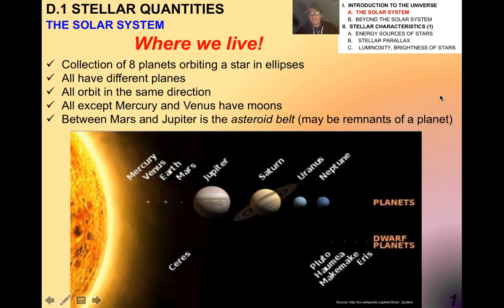Okay students, welcome to topic or option D, your first and only option in IB physics, and this is astrophysics. To start off, I'm going to talk about section D.1, which is called stellar quantities. In this video, I'm going to be quite descriptive.